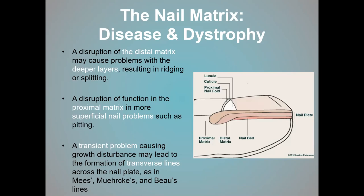Regarding the nail matrix: you can have a problem with the distal matrix causing a problem in the deep layer, or the proximal matrix causing a problem in the superficial nail plate. You can also see transient problems — meaning they come and go. If something is going on systemically and it shows up in the nail plate, it's because there's a problem within the nail matrix or nail bed, and you'll see it as a transverse line going across the entire nail plate.